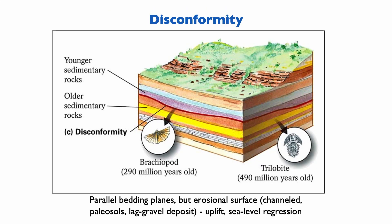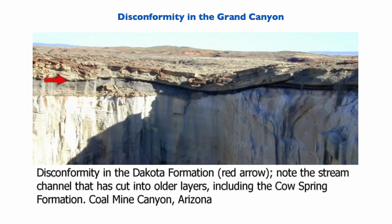Disconformities are different — they essentially represent small erosional unconformities. They're not angular, but they are nevertheless clear erosional surfaces between two sedimentary layers, and there is of course a significant time gap. Here's an example of a disconformity near the Grand Canyon in Arizona, between the Dakota Formation and the Cow Spreeks Formation, indicated by a red arrow. You clearly see an erosional contact and even what appears to be a channelized system — clear evidence of erosion and a time gap. This is a disconformity.